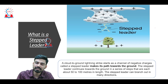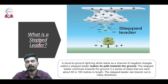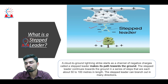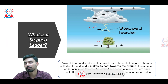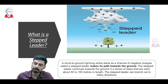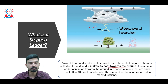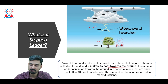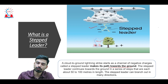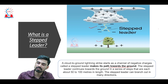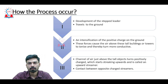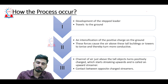The stepped leader, in simple terms, is described as a downward movement of negatively charged particles from a thunder cloud, and this movement happens in a zigzag manner that is not visible to the human naked eye. In more climatological terms, it is a cloud-to-ground lightning strike. It starts as a channel of negative charges, called the step leader, as it makes its path toward the ground in a stepwise manner — about 50 to 100 meters in length. The step leader can also branch out in many directions, which is why you can see many consecutive lightning strikes over a large area.